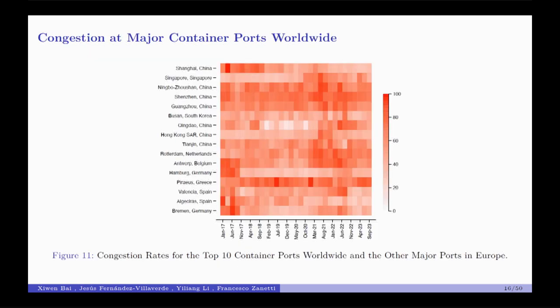Here is a heat map for the top 10 ports around the world plus major container ports in Europe. For example, for the port of Piraeus in Greece, before the pandemic there was no clear increasing pattern in port congestion. But during the pandemic, port congestion escalated, and towards the end of the sample it faded away. Even with differences in congestion rates across ports, in general there is a clear increase in port congestion during the pandemic phase.